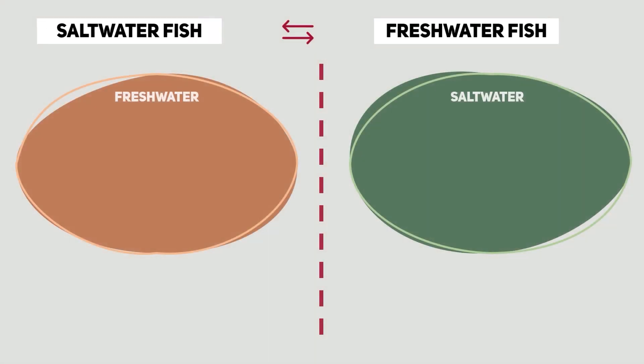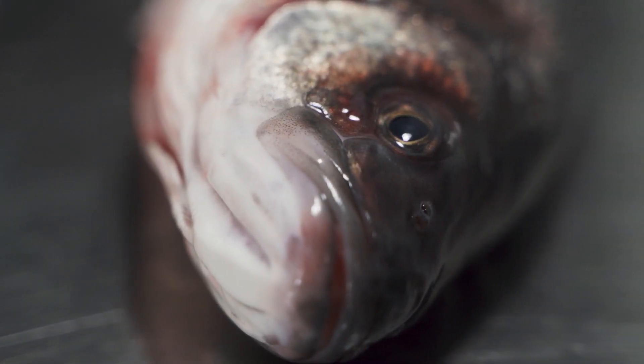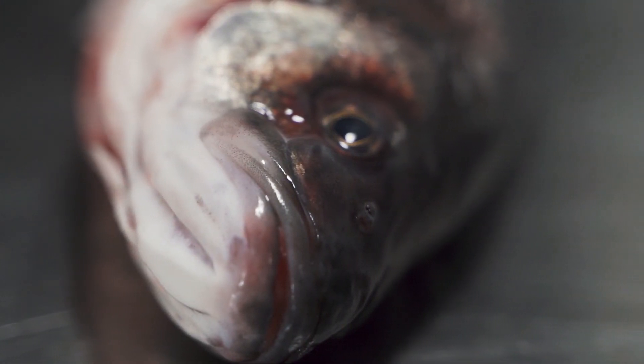When a saltwater fish is placed in freshwater, the freshwater surrounding it has a lower salt concentration than the fish's body fluids. As a result, water will move into the fish body through osmosis, causing the fish to take in too much water. This can lead to disruption of the fish's internal balance, affecting its cells, tissues, and organs. The excessive intake of water can also interfere with the fish's ability to obtain enough oxygen from the water. Ultimately, these imbalances can be fatal to a saltwater fish.